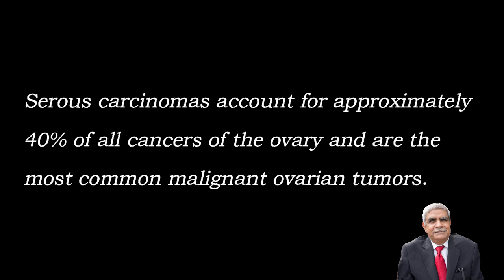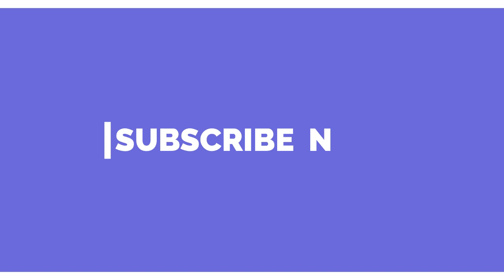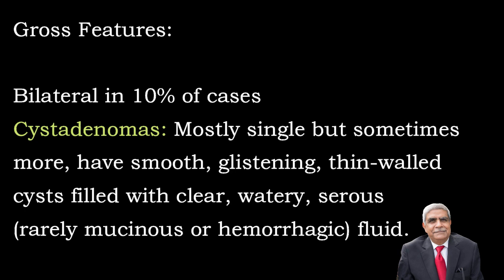Serous carcinomas account for approximately 40 percent of cancers of the ovary and are the most malignant ovarian tumors. Benign and borderline tumors are most common between the ages of 20 and 45 years, whereas serous carcinomas are seen at a later age group. In cases with a positive family history, they are seen at an earlier age group.